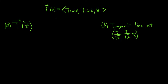In this problem, we're given a vector-valued function and we have to answer two questions. The first question is asking us to find the unit tangent vector at π/4. The second question wants the equation of the tangent line to the graph of this vector-valued function at this point.